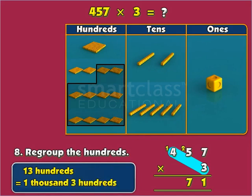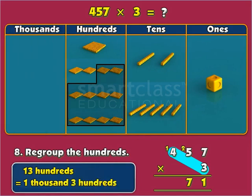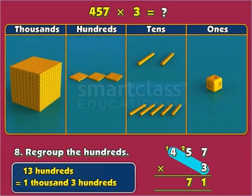And now, we have our final answer, that is 1,371. The product of 457 and 3 is 1,371.